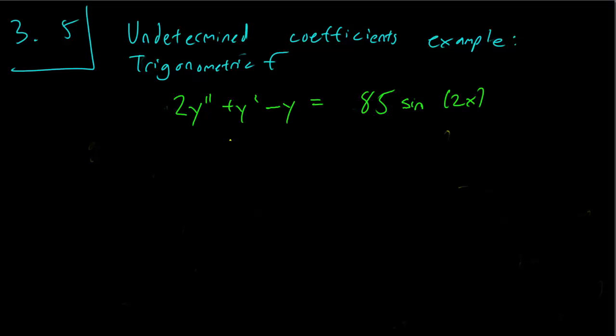Hello class. This is section 3.5 and we are going to go through another undetermined coefficient example, but this time with trigonometric f. So we have 2y double prime plus y prime minus y equals 85 sine 2x.